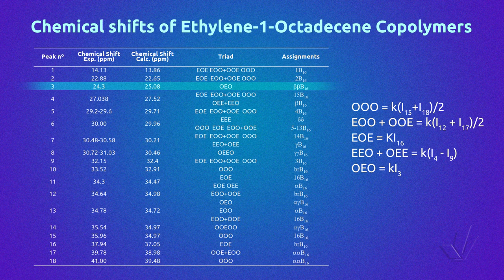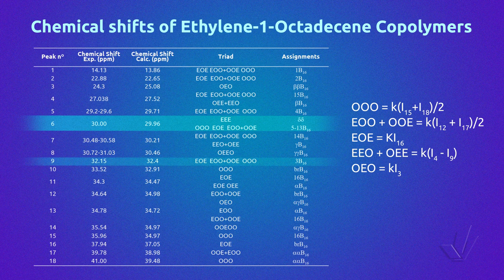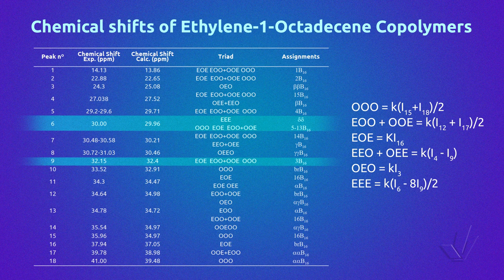And finally, for triads EEE, we use peak 6, but in this peak there are 5 carbons of the branch, from carbon 5 to 13 of the branch. So we can use the integral of peak 9 multiplied by 8 to subtract from the integral of peak 6. Remember that in this case we have to divide by 2 because there are 2 delta-delta carbons of triad EEE.